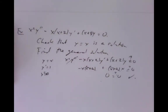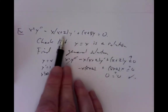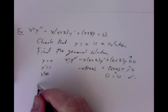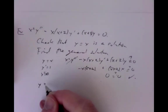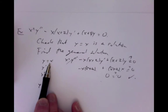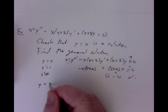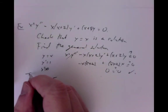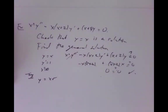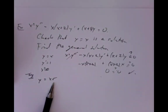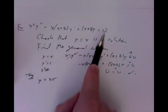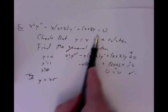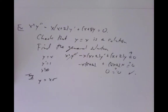Now we find the general solution. We know y = x is one solution. Variation of constants tells us to try y = v·x, or xv. We're varying the solution by multiplying it by some unknown v, trying to see if we can get other solutions — in particular for the homogeneous problem.